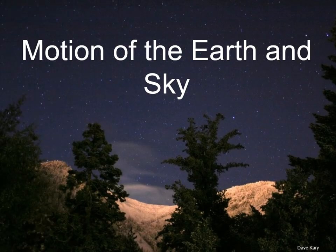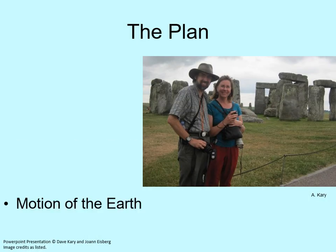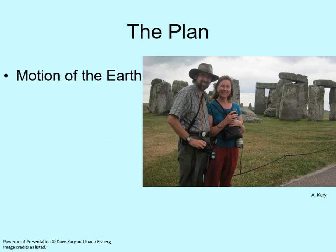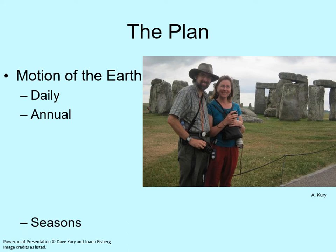It's time to get back to astronomy. In this chapter, we're going to focus on the motion of the Earth and how it affects what we see in the sky. We'll start with the Earth's daily spin, then move on to the annual motion around the Sun, and finish up by looking at seasons.